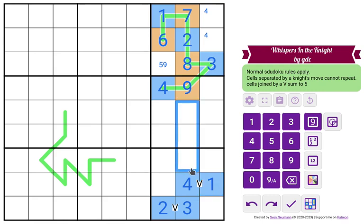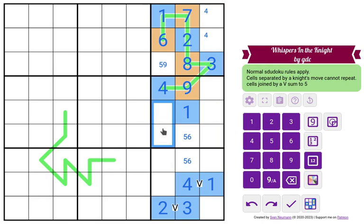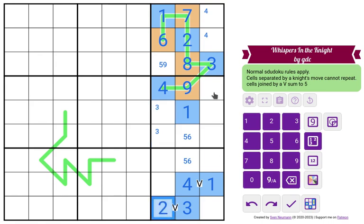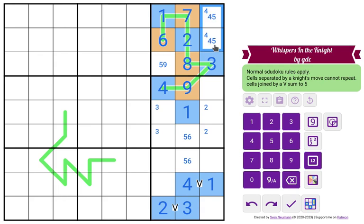There's a 1 here for the column. So it goes here. And these are 5, 6. 3 goes here. 2 goes here. I can't go here because of the knight move. This is 4, 5 and 9.